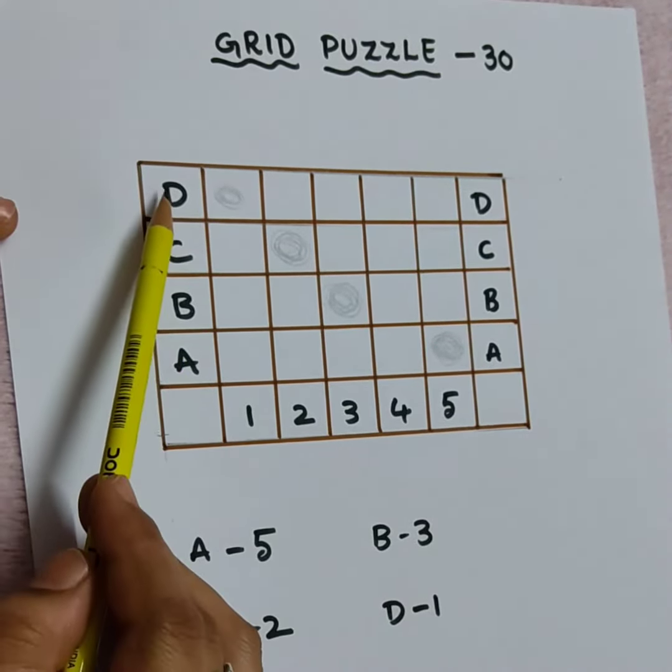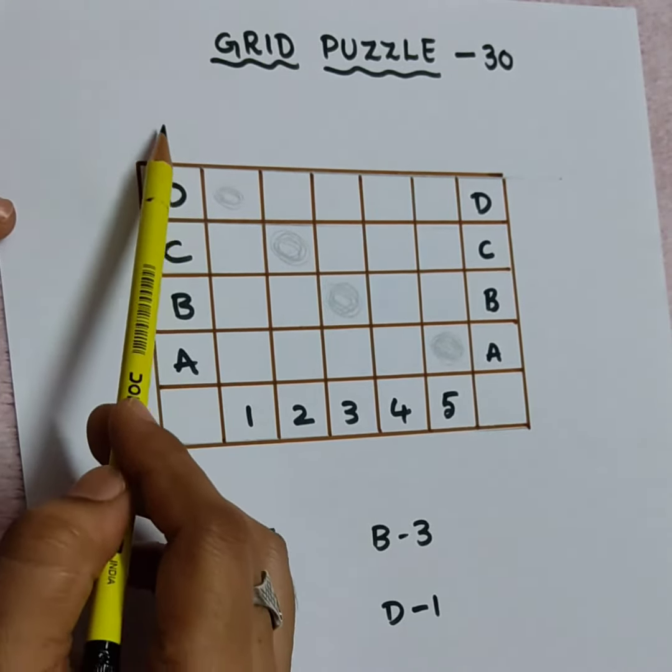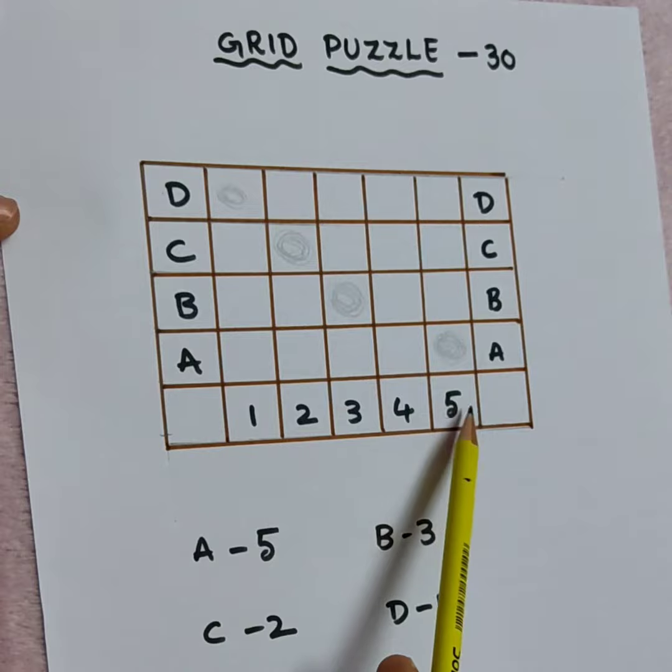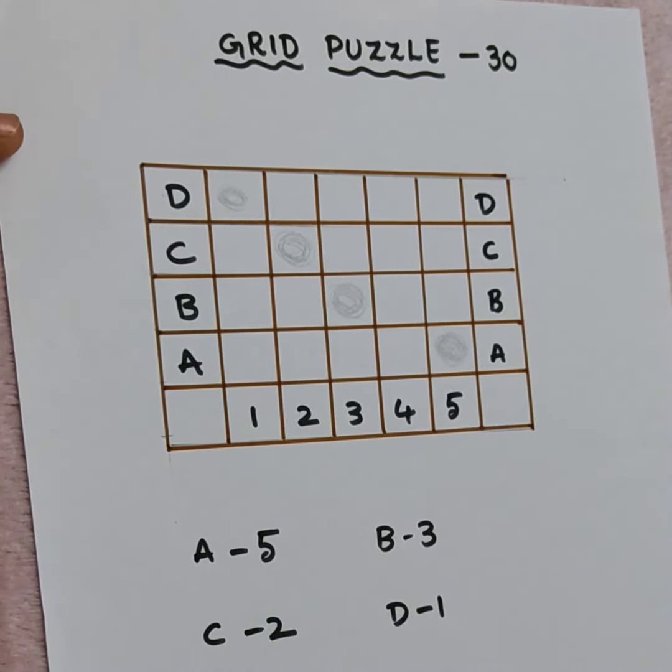Like this, you can write it. I wrote here A to D. If you want to write, you can write it E, F, G, R, numbers. You can extend 6, 7, like that also. You can make it grid puzzle.